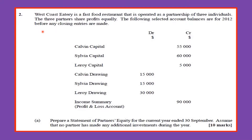The West Coast E3 is a fast food restaurant operated as a partnership of three individuals. The three partners share profits equally. We are given the capital of the three partners — Calvin, Sylvia, and Leroy — along with their drawings and an income summary. The income summary is another name for the profit and loss account, so the profit of the partnership would be $90,000.